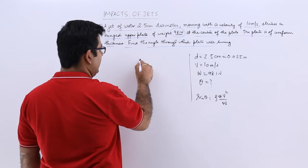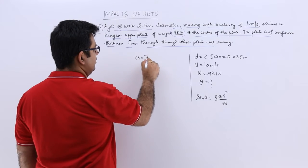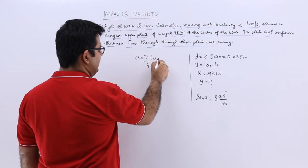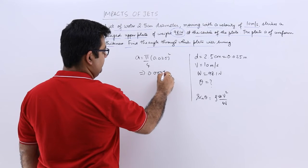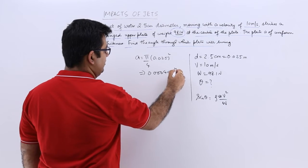If you find out A from here, that is the only part missing. So pi by 4 times 0.025 whole square. This would give you 0.00049 meter square.